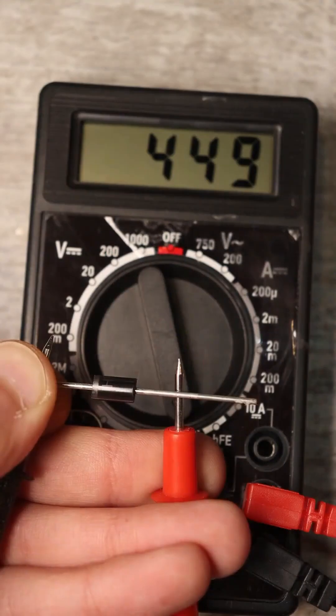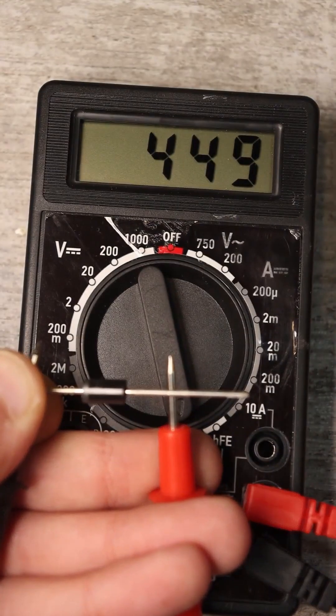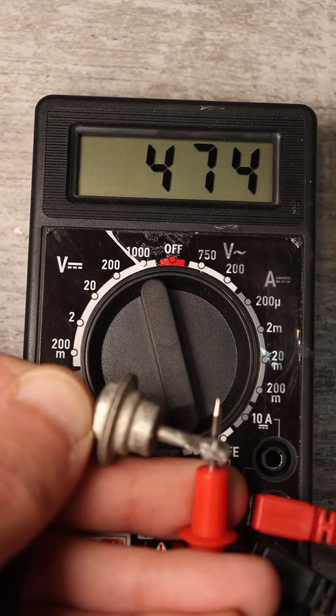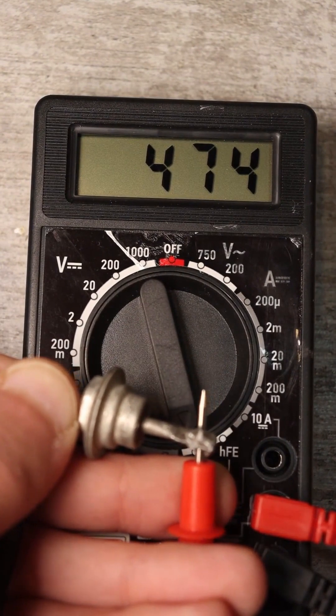You will see numbers on the device's display. This shows the voltage drop across the diode junction. For regular diodes, this value ranges from 0.5 to 0.7 volts.